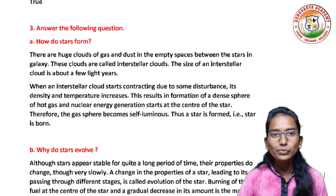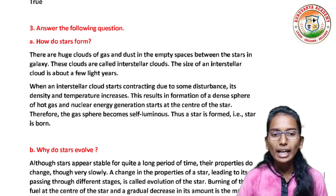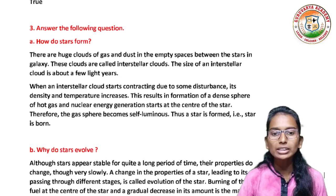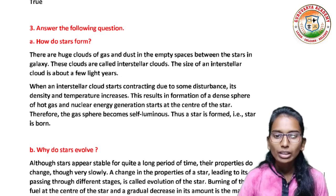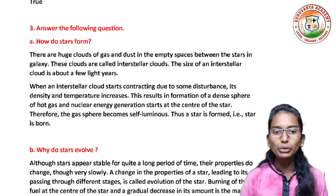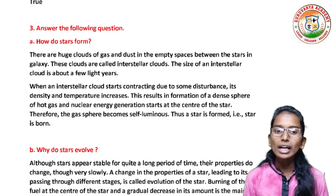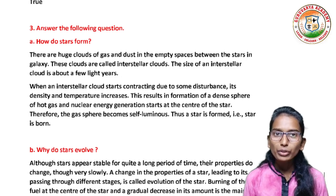How do stars form? Answer: there are huge clouds of gas and dust in the empty space between the stars in the galaxy. These clouds are called interstellar clouds. The size of an interstellar cloud is about a few light years. When an interstellar cloud starts contracting due to some disturbance, its density and temperature increase. This results in the formation of a dense sphere of hot gas and nuclear energy generation starts at the center of the star. Therefore, the gas sphere becomes self-luminous. Thus, a star is formed — that is, a star is born.